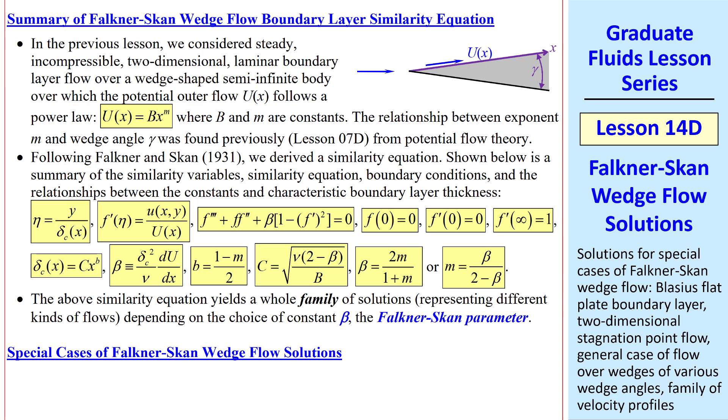As a quick summary from the previous lesson, we're talking about boundary layers along this wall where the outer flow velocity field is given as a power law function. An angle gamma can be associated with this exponent from potential flow theory as discussed previously. Here's a summary of what Falkner and Skan did back in 1931. They derived this similarity equation with these boundary conditions and these similarity variables. And here's some other equations for the constants.